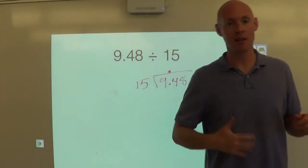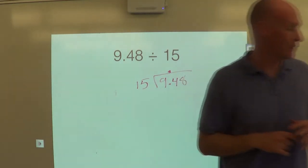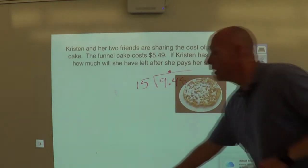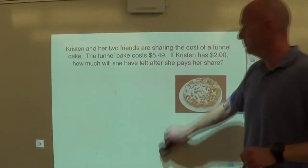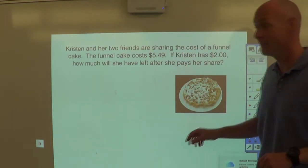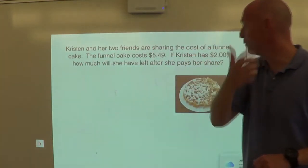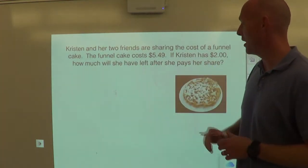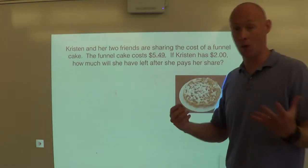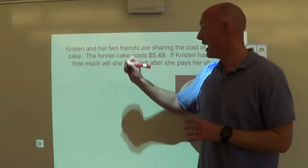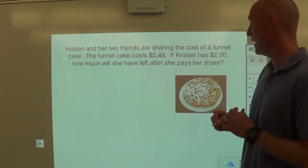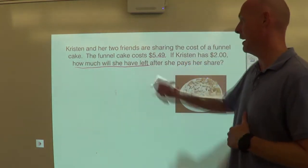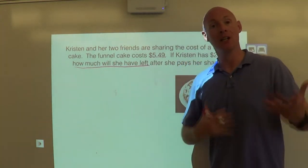Now, this is the number story that is probably something you could run into in real life. It says, that looks pretty good. Kristen and her two friends are sharing the cost of a funnel cake. The funnel cake costs $5.49. If Kristen has $2, how much will she have left after she pays her share? So the question we're trying to answer is, how much will she have left? All right, let's break this down.